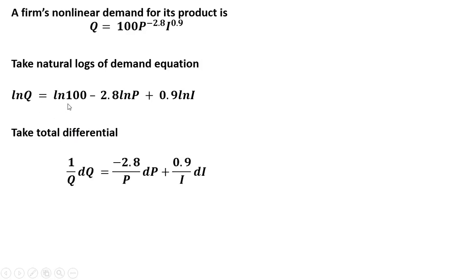I want to take the total differential of this equation. Taking the total differential, on the left-hand side, we're going to get 1 divided by Q times the change in Q, or DQ. And then on the right-hand side, we get the following. This constant, that doesn't change, so that just drops out at 0.